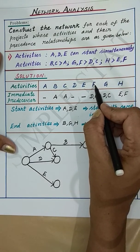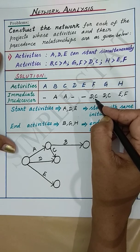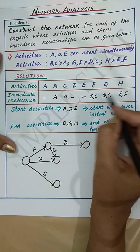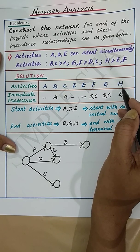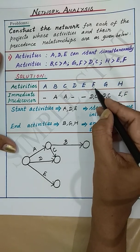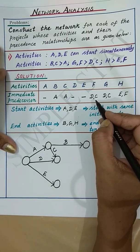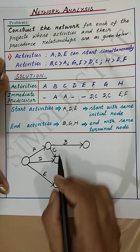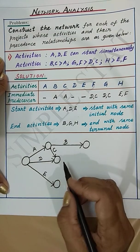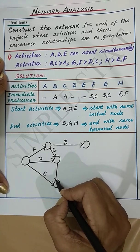Next, activity F occurs after D and C. Activity F occurs after D and C, but it also occurs along with E as the predecessor for activity H. Therefore, activity F should start after C and D and end where activity E ends. So we can draw activity F accordingly.